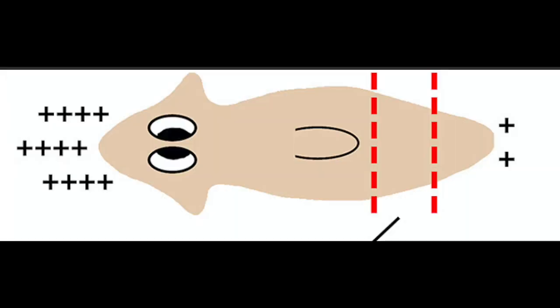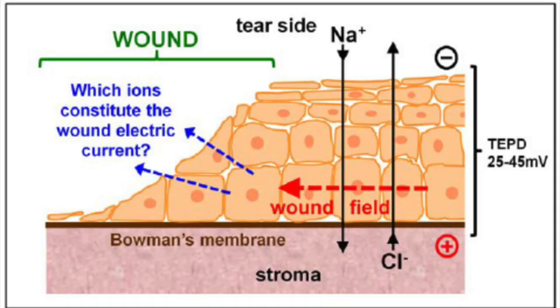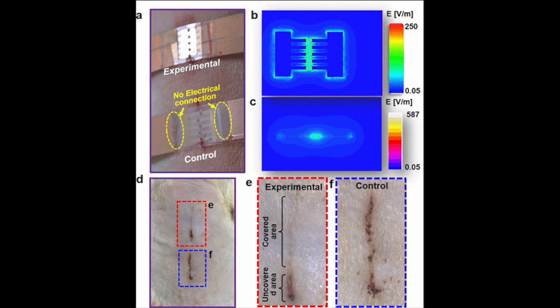Before discussing the rest, I want to mention that there is external bioelectricity. For example, when you get a wound, there is a current across that wound, and you can increase the healing rate by increasing the current. It's slightly related to this, and I think it's really awesome, so it's going to be the topic of my next video.